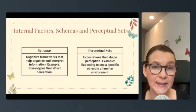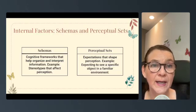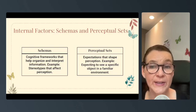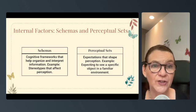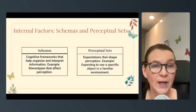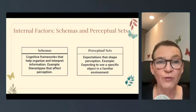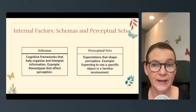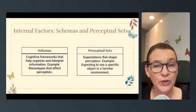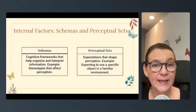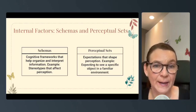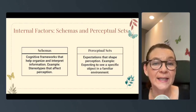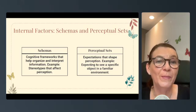The last definition we'll look at here is schemas and perception. Schemas are cognitive frameworks that help organize and interpret information — for example, stereotypes that affect our perception. When we think of schemas, we think of things we already know, things already in our memories. Perceptual sets are the expectations that shape our perception — for example, if you're expecting to see a specific object in a familiar environment, you might see that.